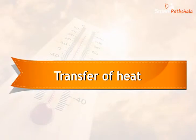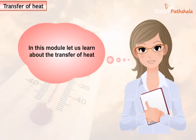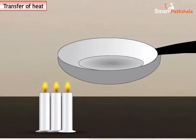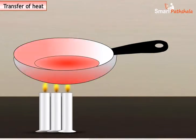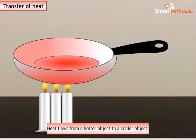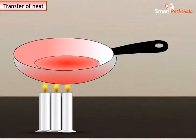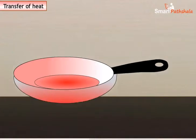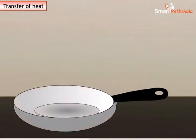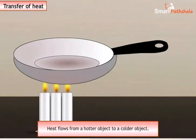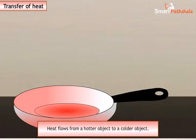Transfer of heat. In this module, let us learn about the transfer of heat. When we place a frying pan on the flame, we observe that the frying pan becomes hot because the heat passes from the flame to the frying pan. When we remove the pan from the fire, we observe that the pan cools down slowly. This is because the heat is transferred from the pan to the surroundings. From this, we can conclude that heat flows from a hotter object to a colder object.